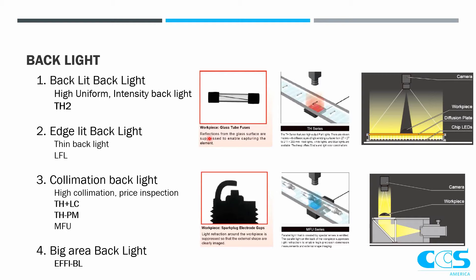Products that can help us achieve this: our normal backlight is the TH2. If we want to collimate the TH2, we can either add light control film to it, or there is a TH2-PM model which has the built-in light control film. Then the MFU is the highly collimated backlight. And the FEBL series is our large area backlights, which can be up to 1.5 by 1.5 meters squared. If you need a very large backlight, that's a great option, and it can come with collimation filters and film as well.